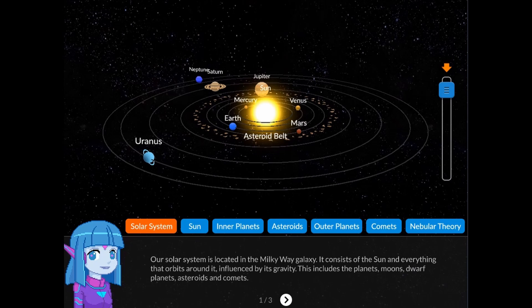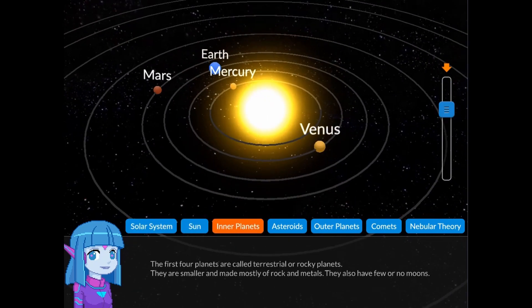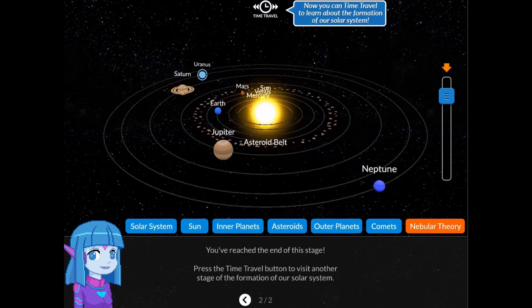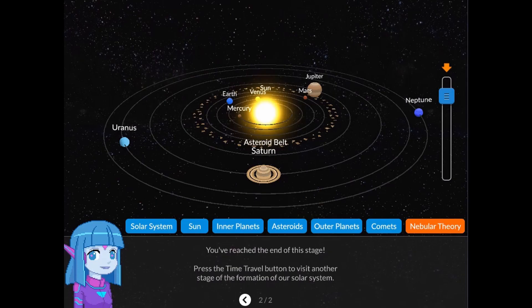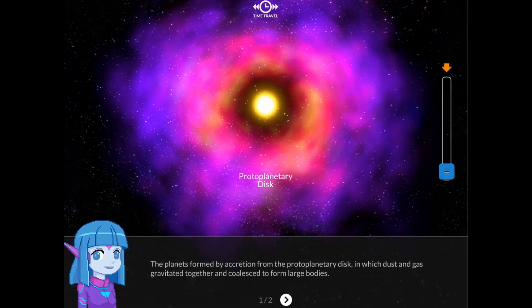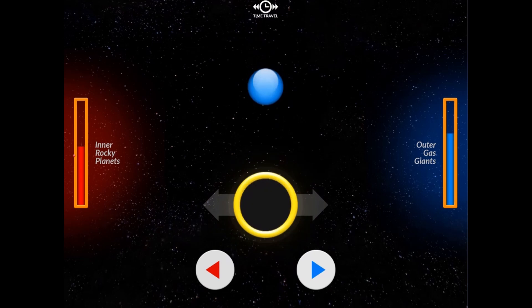In this game, you will go on a time travel journey from the formation of our solar system all the way into the distant future up until the death of our sun. You will learn how the solar system began to form, how the sun and the planets formed, and how the sun will eventually die.